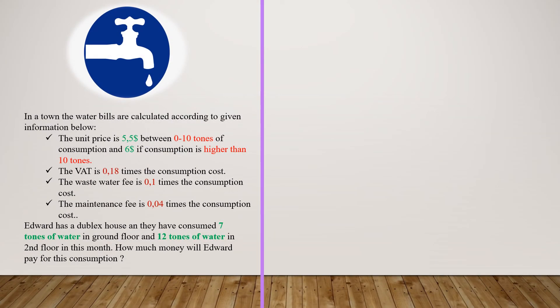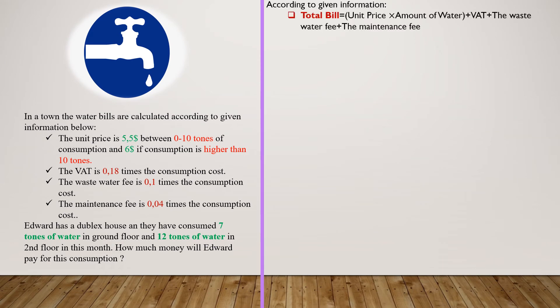According to the problem, the total bill can be calculated by adding the unit price multiplied by the amount of water consumed, VAT, the waste water fee, and the maintenance fee.